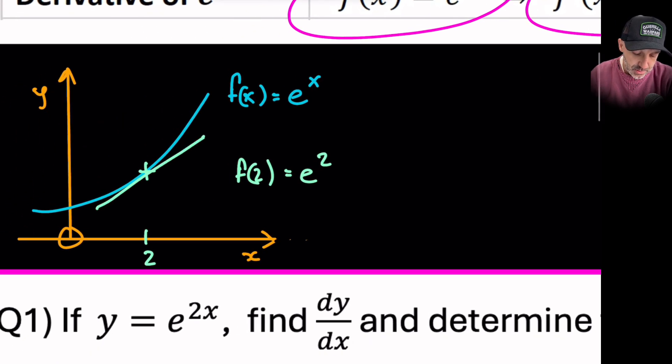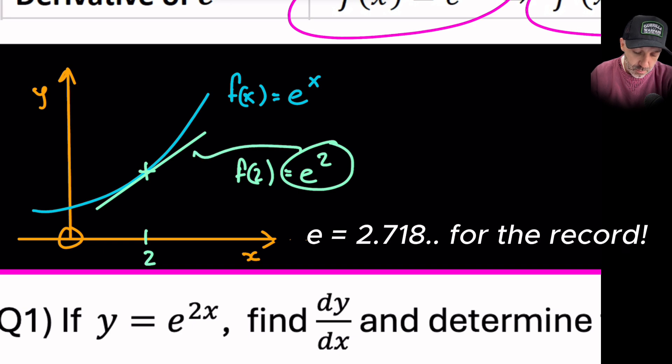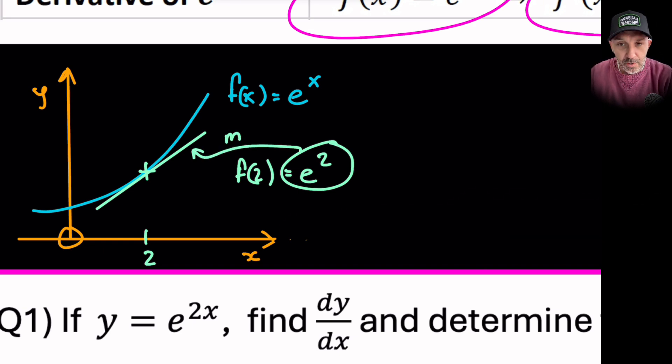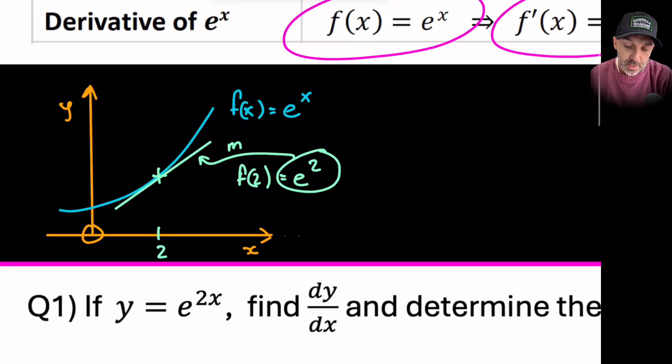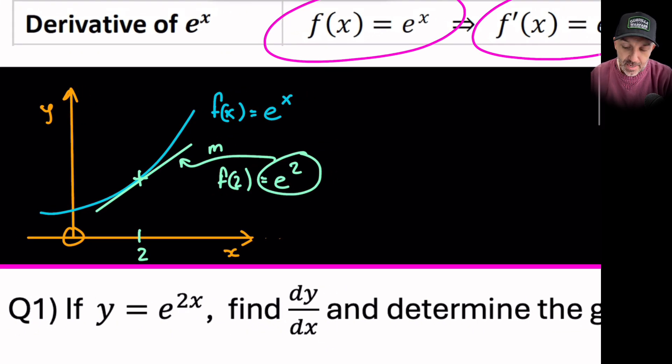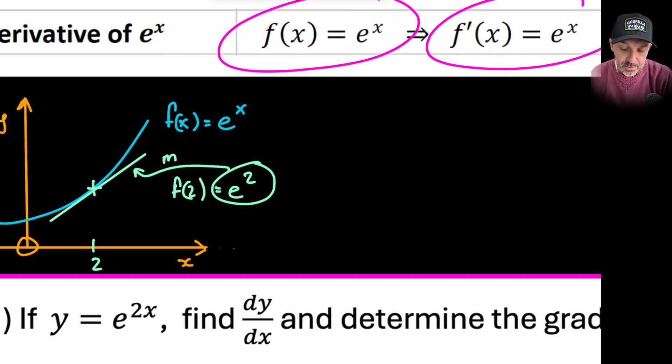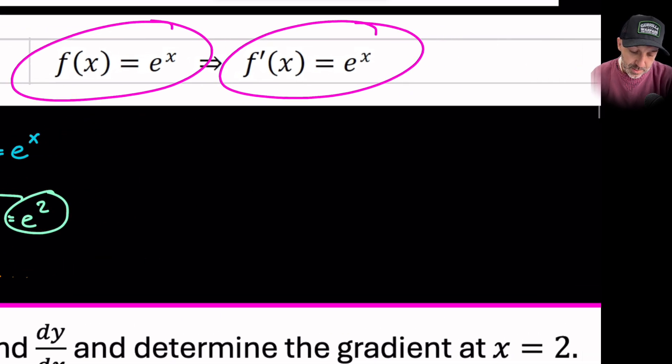So if we were to draw a tangent to the curve at this point, this numerical value would also be the gradient at that point. It's only one of the curves in mathematics that this is true for, that the derivative of the function is still the same value. So that is just a small concept that I wanted to cover.